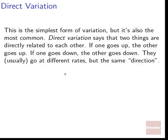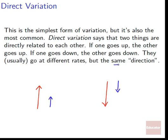Direct variation is the simplest form of variation, but it's also the most common. Direct variation says that two things are directly related to each other. If one goes up, the other goes up. If the red one goes up, the blue one will also go up. Similarly, if the red one goes down, the blue one also goes down. They will go at different rates — the blue one always goes at a smaller rate and the red one at a bigger rate — but they always go in the same direction. Direct variation is same direction: one goes up, the other goes up; one goes down, the other goes down. They move in lockstep.